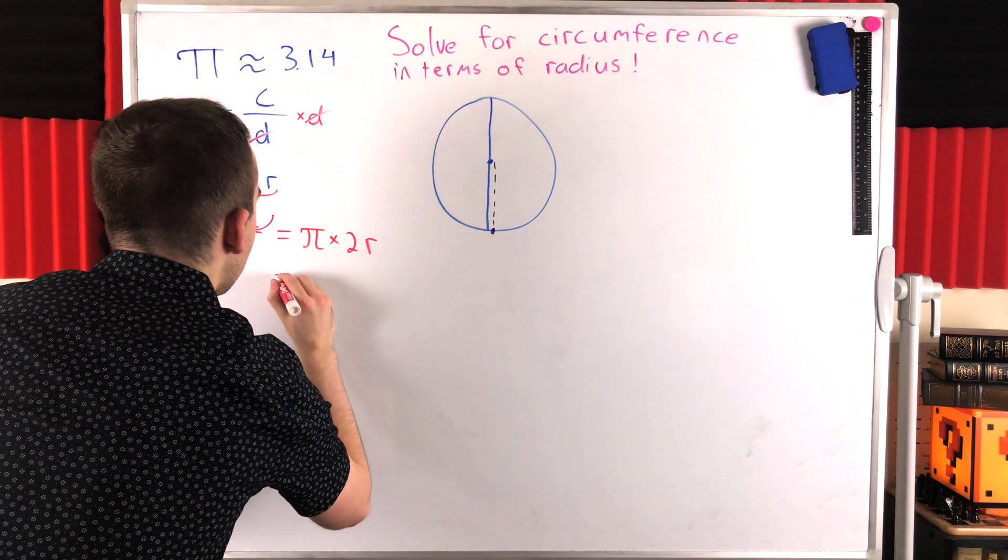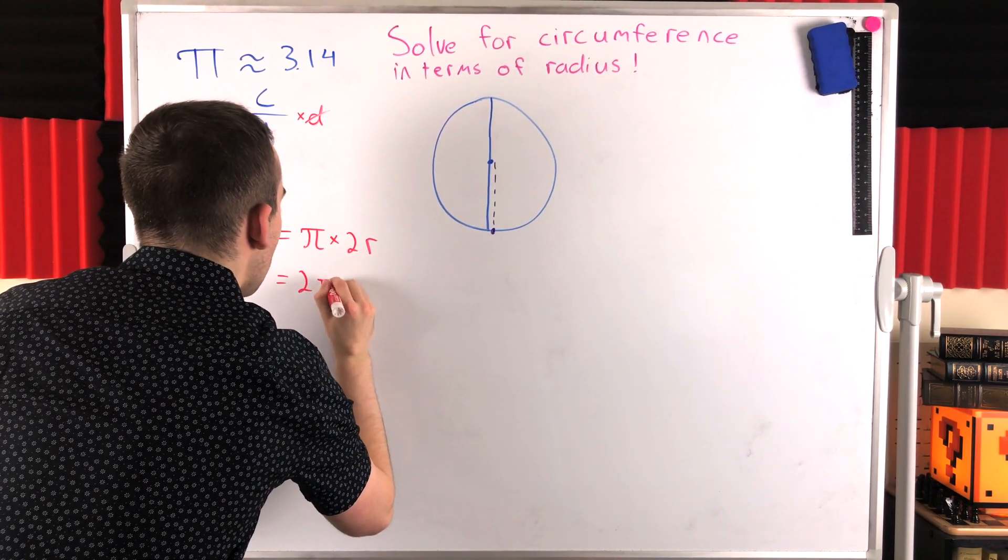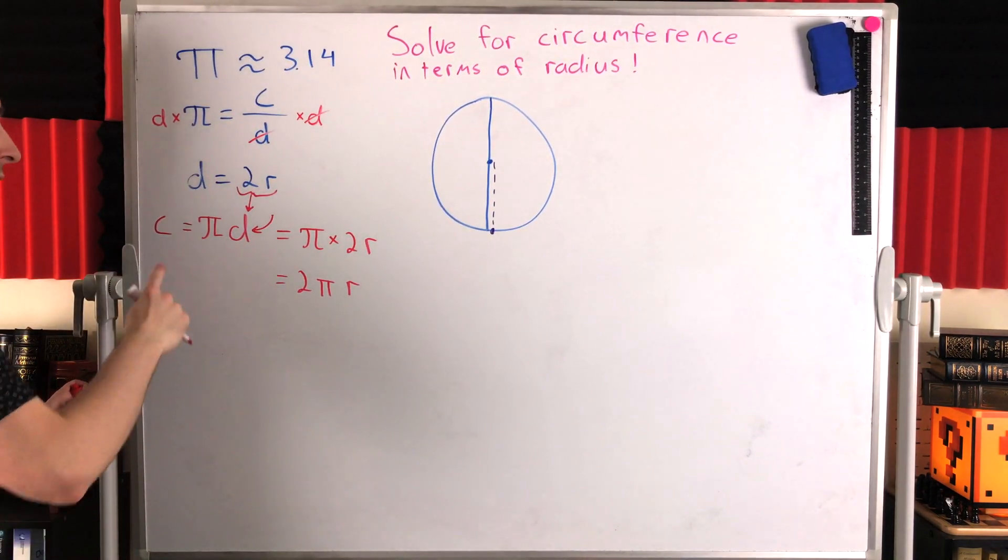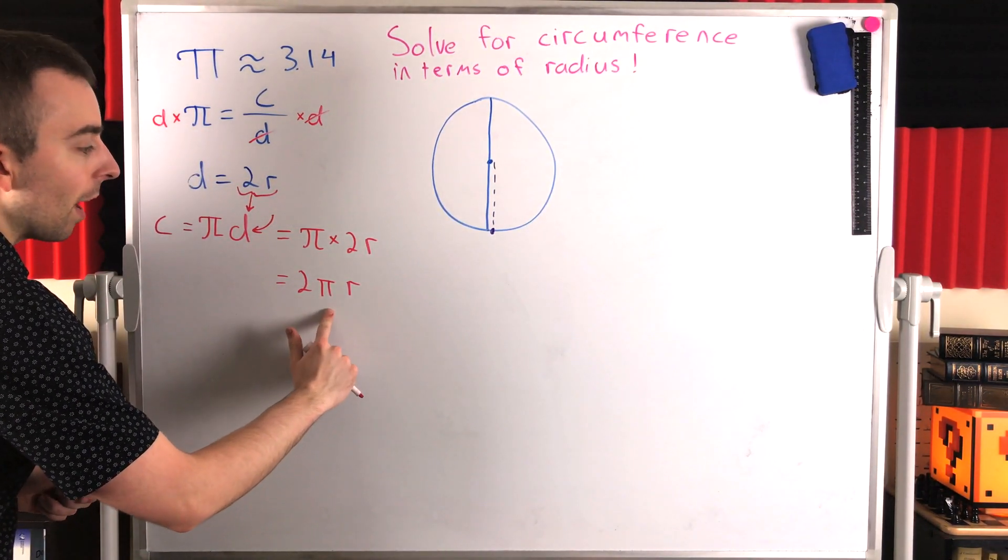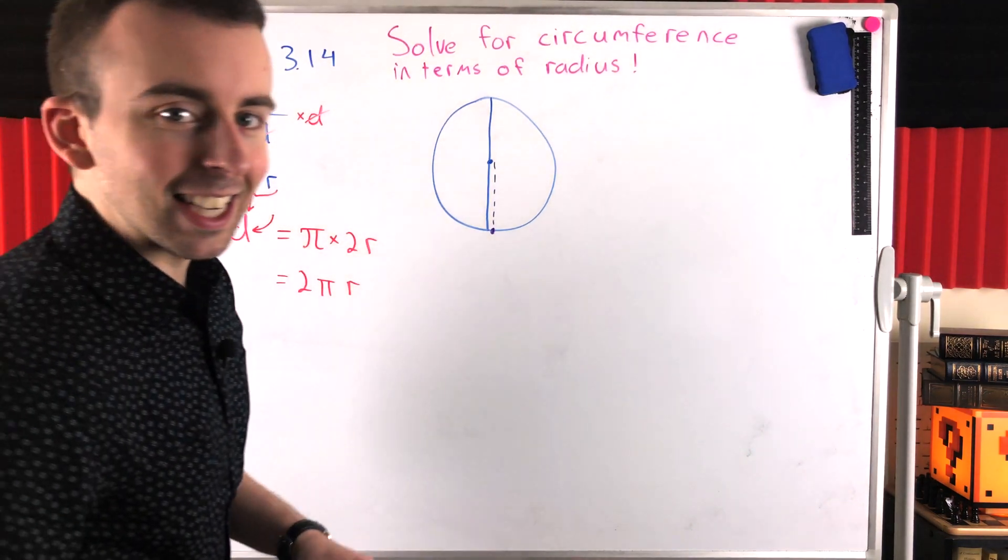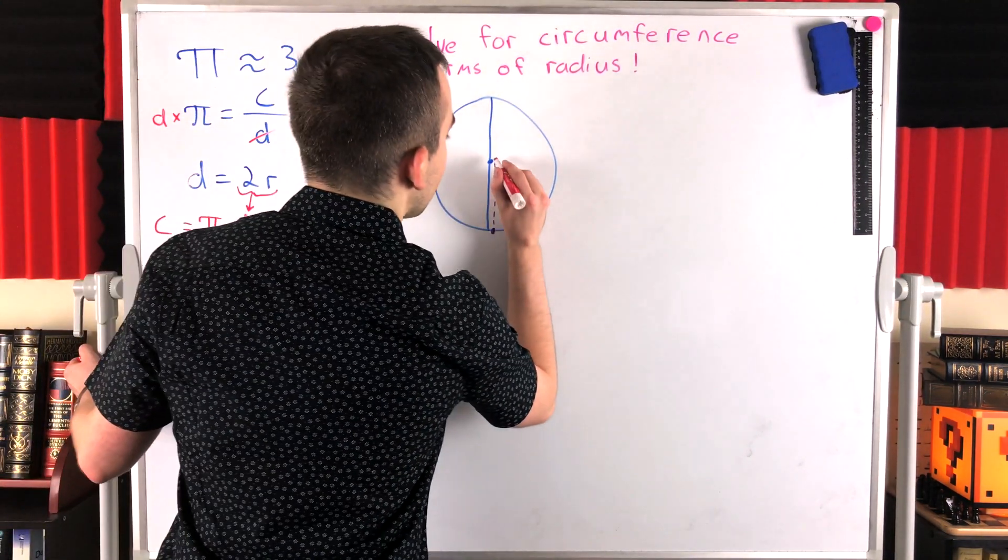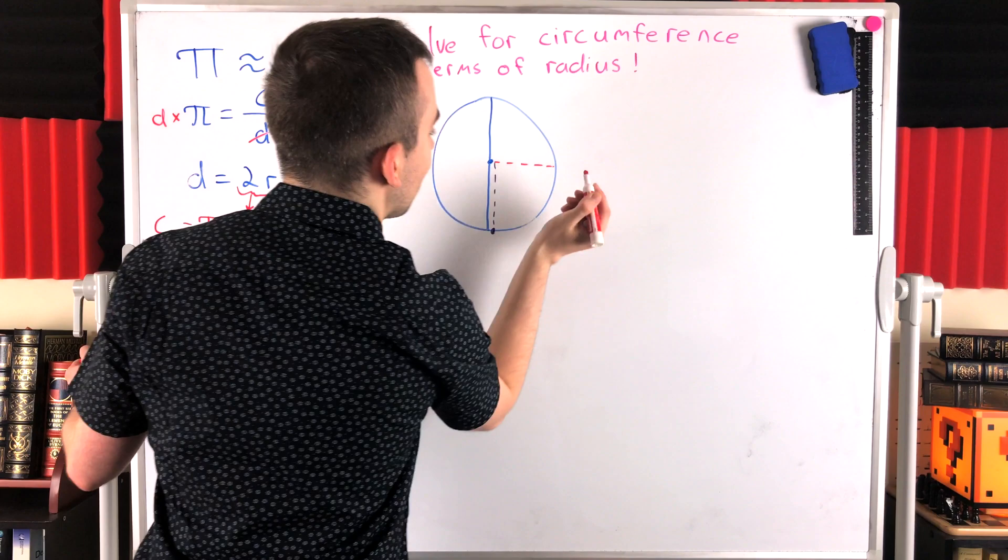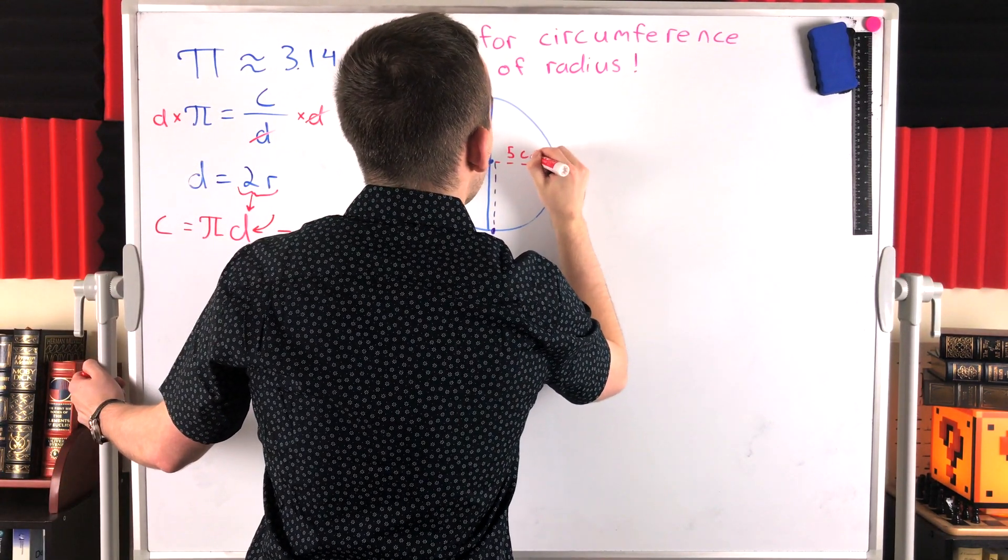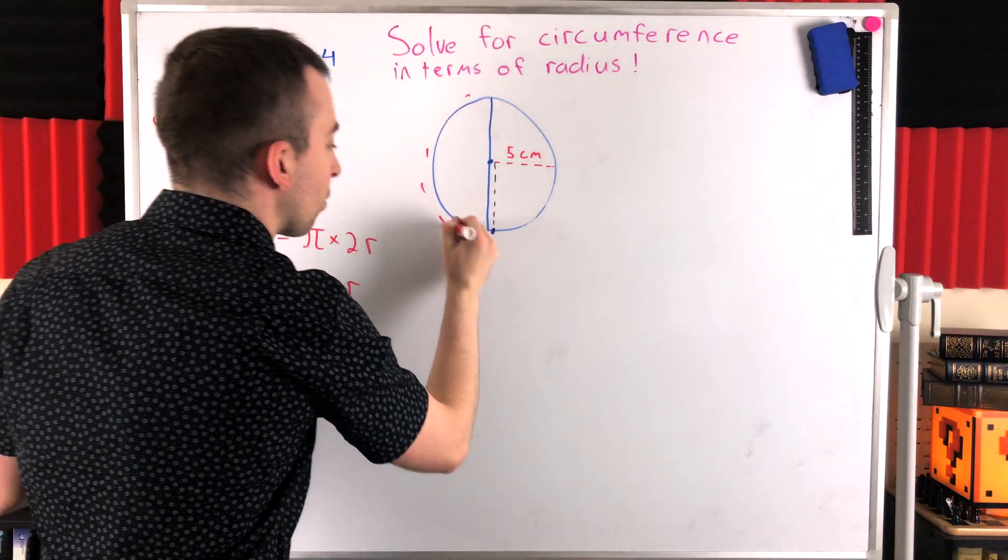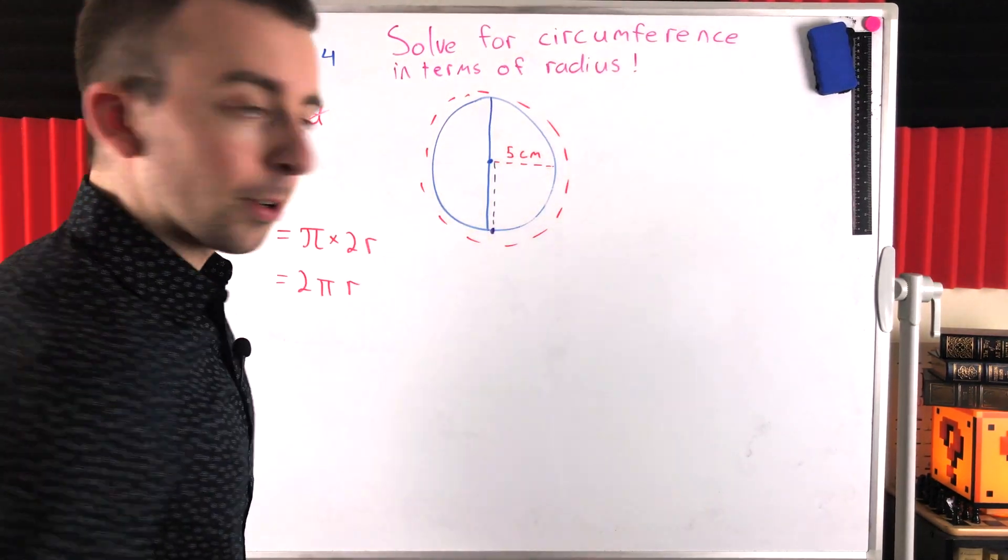And what we've got is pi multiplied by the diameter, which is two times the radius. And you'll more often see this written as two pi r. So to find the circumference of a circle from its radius, you just multiply two times pi times that radius. So for a quick example, let's just draw another radius of this circle. Let's say the radius of this circle is five centimeters. How are we going to find the circumference, the distance around the circle?